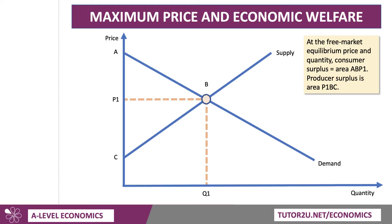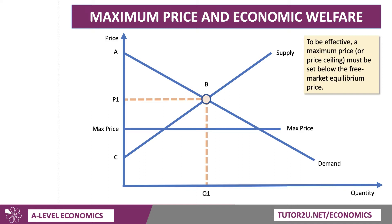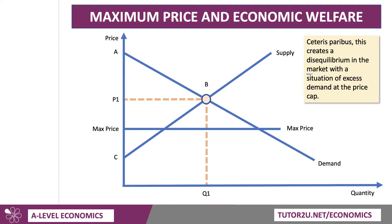So that's the area of producer and consumer surplus before the maximum price. Now, to be effective — to have an impact on the market — a maximum price, or price ceiling, must be set below the free market price. And of course, the lower you set it, the greater the potential impact. I've drawn in a price ceiling that lies quite a little distance below the free market price P1. Ceteris paribus, this creates a disequilibrium in the market with a situation of excess demand at the price cap. More people want to buy the product because it's cheaper, so you get an expansion along the demand curve — demand expands to Q2. But there's less incentive for the producer, the supplier, the grower to produce at that low price, and so supply contracts down the supply curve from Q1 to Q3.